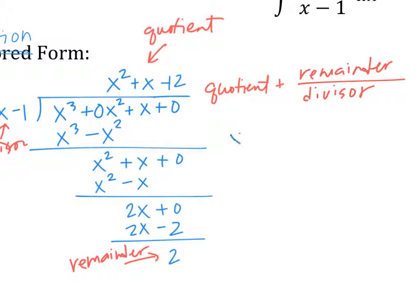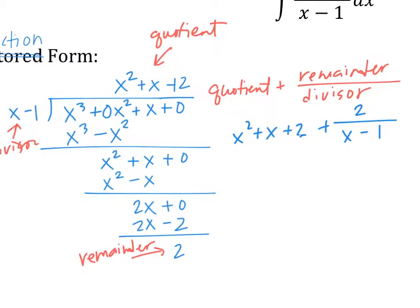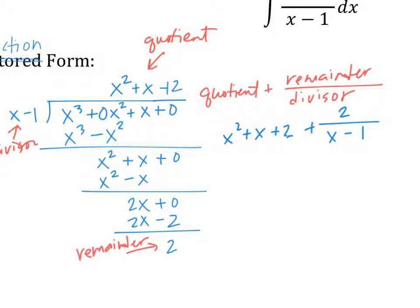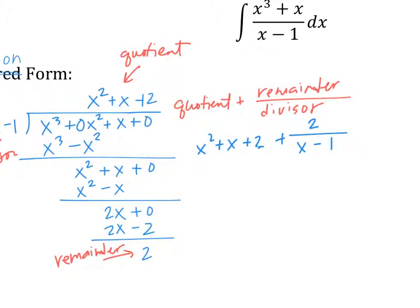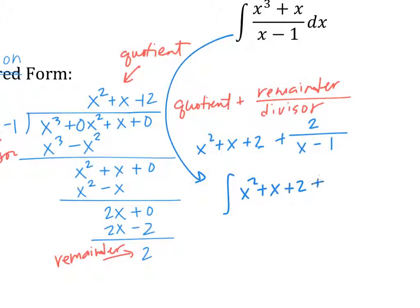So that is X squared plus X plus 2, plus 2 over X minus 1. That is the same polynomial, but now it's in fraction form. And what you want to do now is integrate that. So this whole integral became the integral of X squared plus X plus 2 plus 2 over X minus 1, dx.